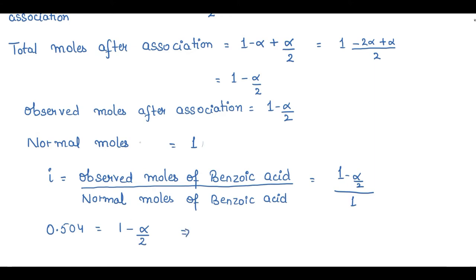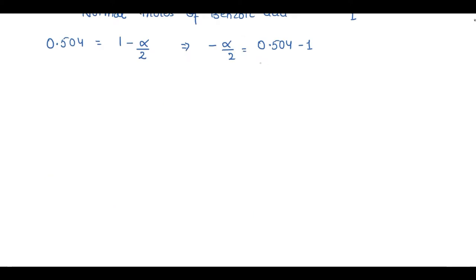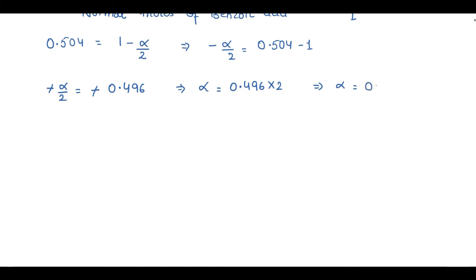Rearranging: −α/2 = 0.504 − 1 = −0.496. The negatives cancel, and cross-multiplying: α = 0.496 × 2 = 0.992. So the degree of association α = 0.992.